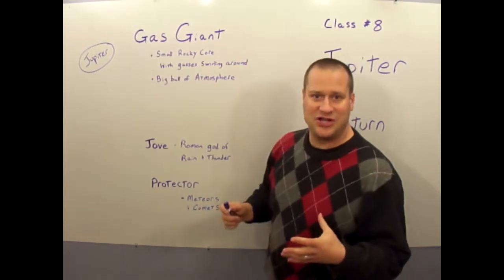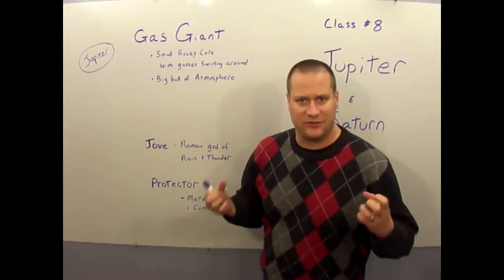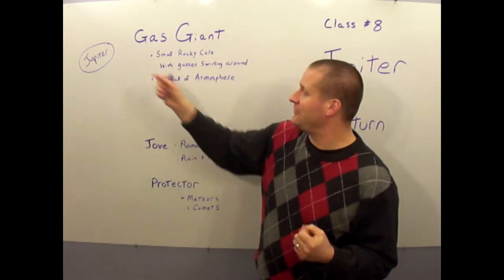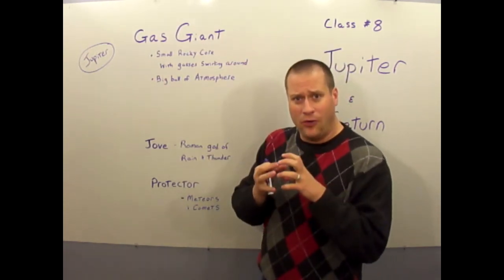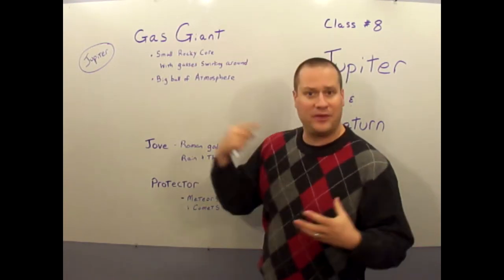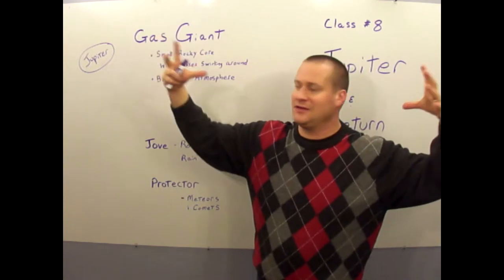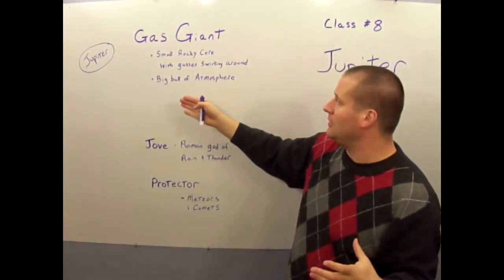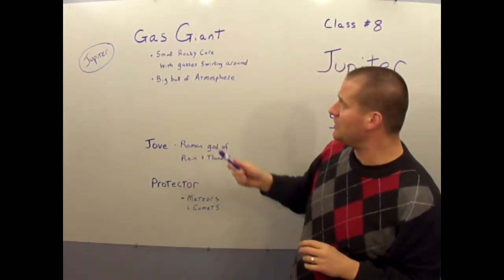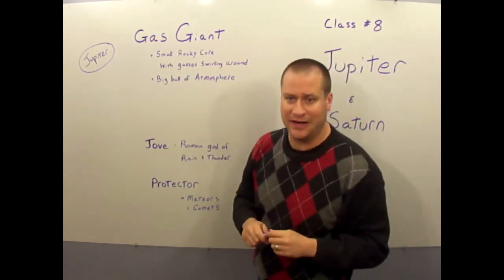So up until we got to the asteroid belt, they were all terrestrial planets, rocky, earthy, solid planets. Now we're at what's called the gas giants that have a small rocky core, similar to like an Earth or Mars or Venus, but with gases swirling all around it. Those gases being lighter just expand out and make this huge ball of atmospheric gases swirling around this small little core. They call them a gas giant because they're so much bigger than the terrestrial planets.